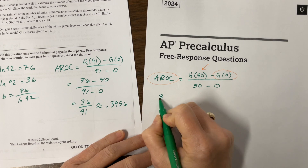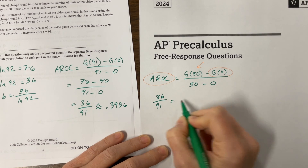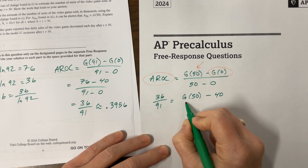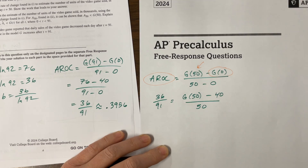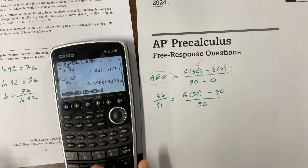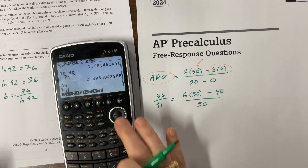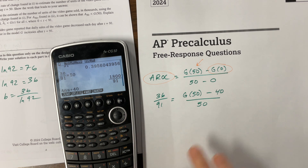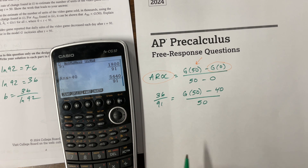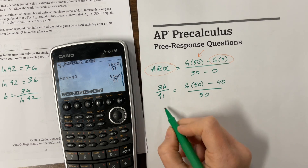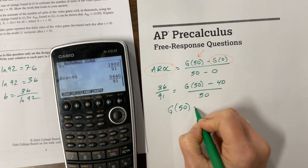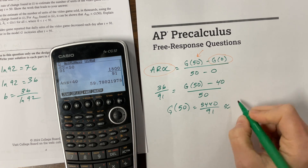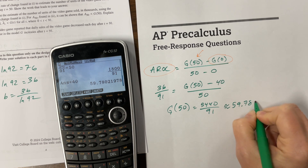So: 36 over 91 equals g of 50 minus g of 0, where g of 0 is 40, over 50. I multiply 36 over 91 by 50, then add 40. I found that g of 50 is equal to this, which is approximately equal to 59.7802.